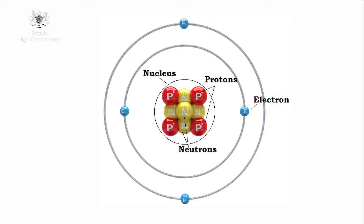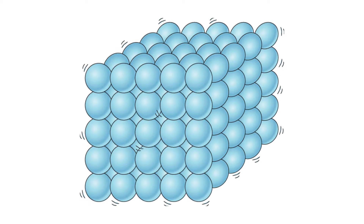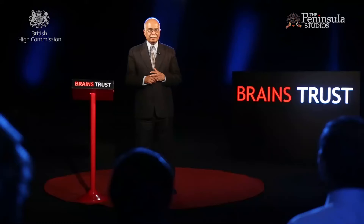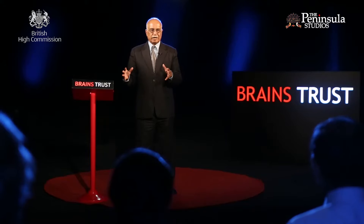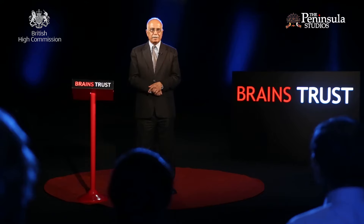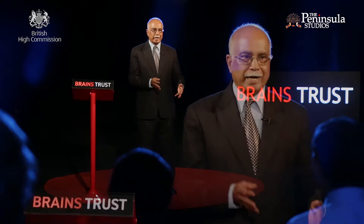Now if you take any element and break it into smaller and smaller pieces — take a chunk of iron, cut it in half, you get two chunks of iron, cut it more and more — the smallest piece you'll get to which is still iron is called its atom. A chunk of iron is made up of identical iron atoms strung together in a certain way. Same thing is true for gold, oxygen, nitrogen. Every element's basic unit is an atom, and there are atoms for every element — iron atom, gold atom, and so on.